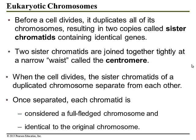Before cells divide and make new cells — and you come from one cell, so when you are developing as an embryo and fetus we have to make more — before they can divide, they have to make sure the new developing cells have the map. The map is your genetic information. We have to duplicate the map, those chromosomes. So how many chromosomes do you have? 46.